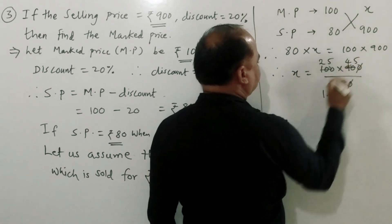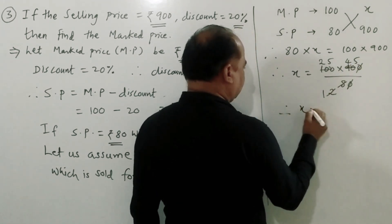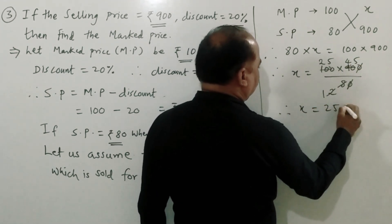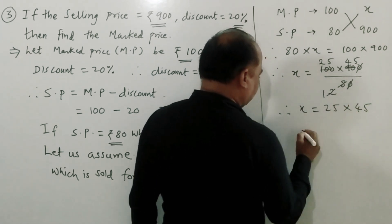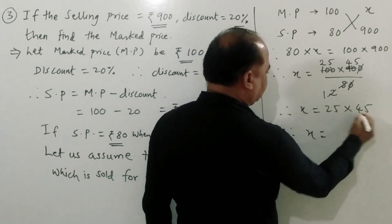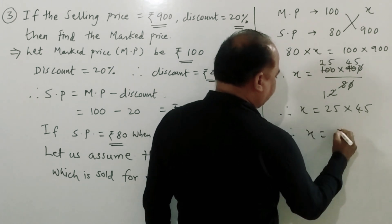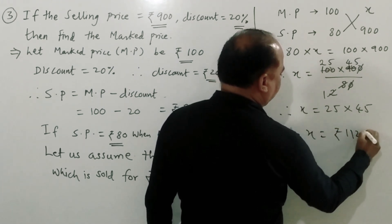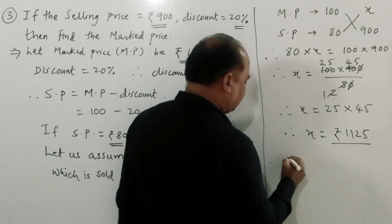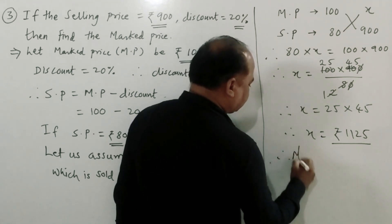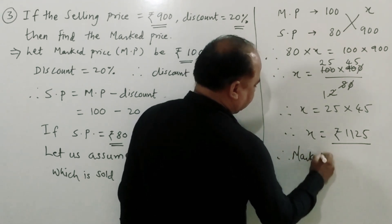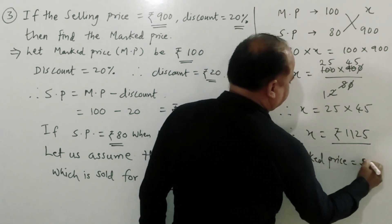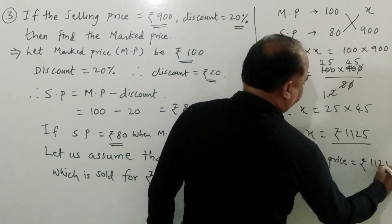So x is equal to 25 into 45, which equals 1,125 rupees. Therefore, the mark price of the article is rupees 1,125.